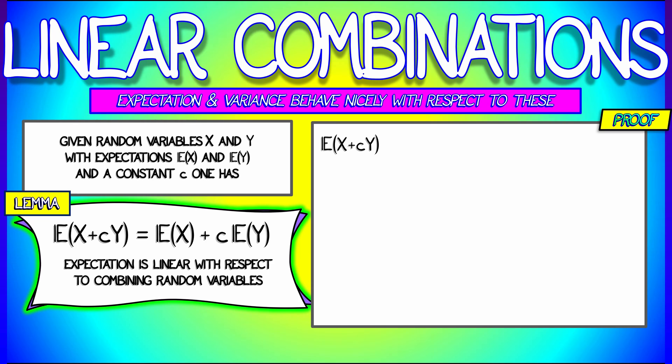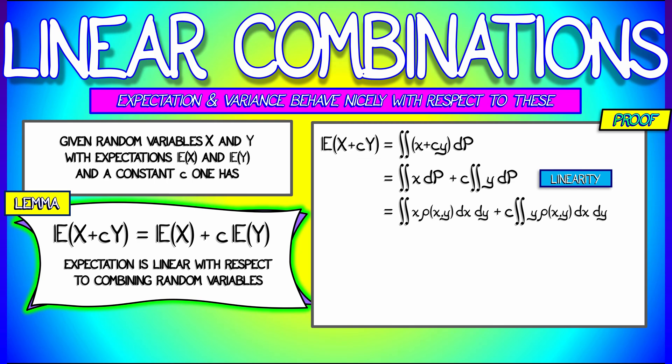The proof of this is pretty much a straightforward writing out the definition. If I compute the expectation of X plus cY, I really have to integrate X plus cY with respect to the joint probability. I'm going to break this up into two integrals using the linearity of integration, and I really now just have to worry about integrating X and then integrating Y with respect to the joint probability density, that is, rho of X, Y, dX, dY.